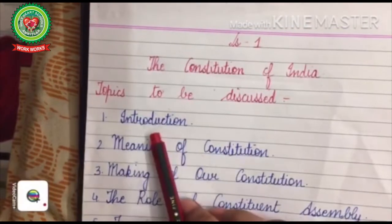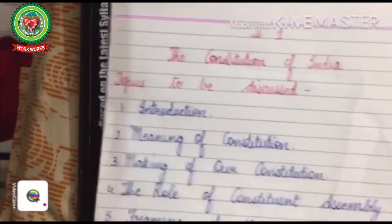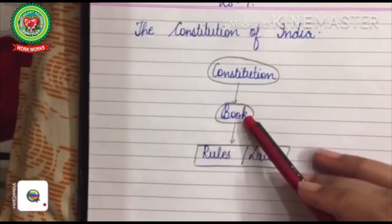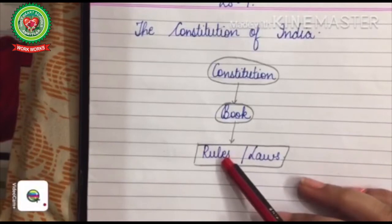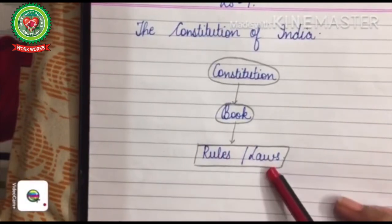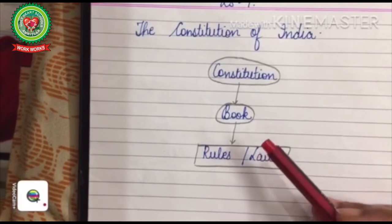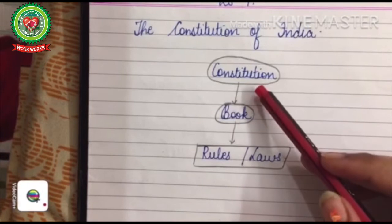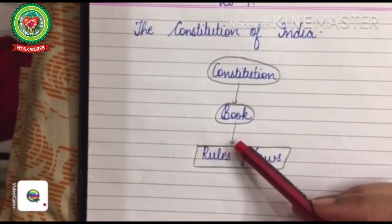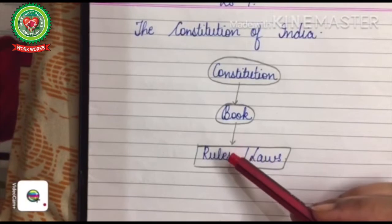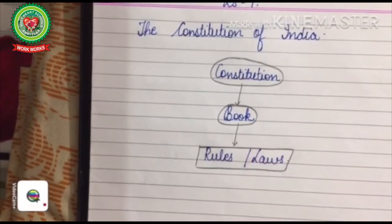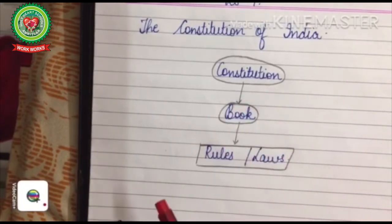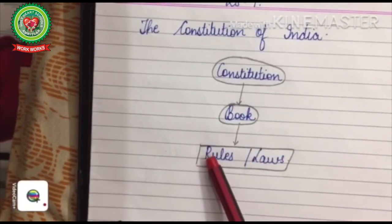Today we will discuss its introduction. What is a Constitution? A Constitution is a book of rules and regulations or laws according to which the government of a country functions. It defines and determines the form of government and the powers to be exercised by the various organs of the government.